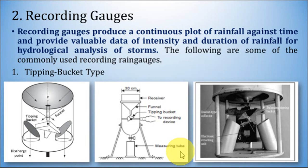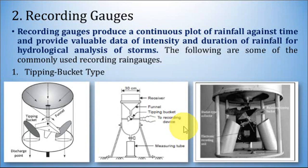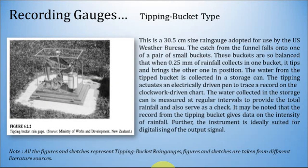The first type is the tipping bucket type rain gauge. It has an arrangement consisting of a receiver, a cylindrical funnel, and a tipping bucket mechanism which rotates, with movement recorded on graph paper attached to a rotating drum. These figures from different literature sources all represent the tipping bucket type of recording rain gauge.